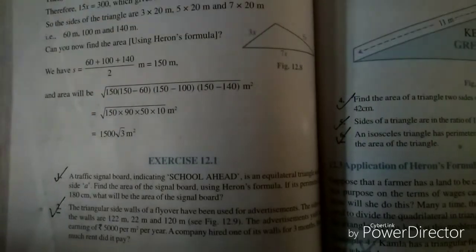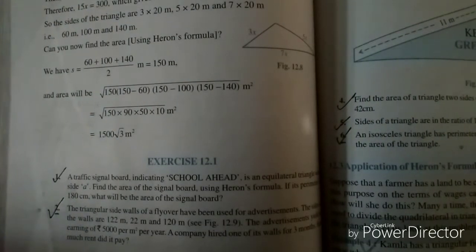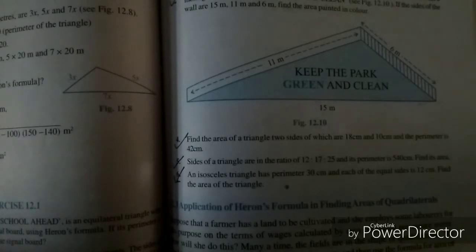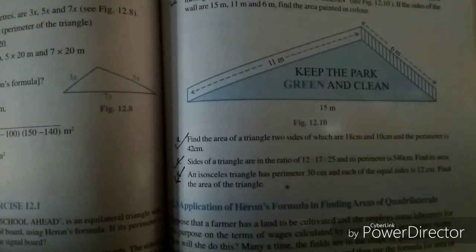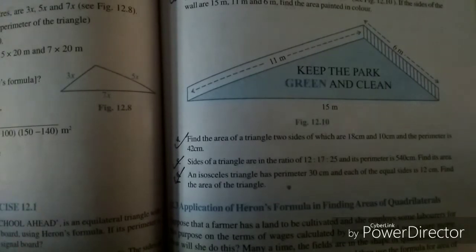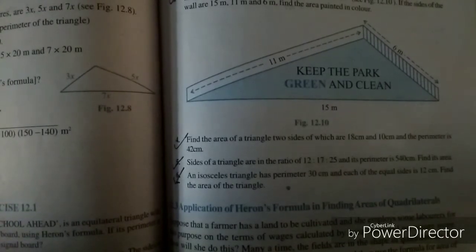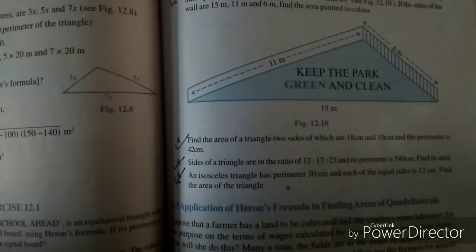You have exercise 12.1 and here your question number 2 is very important. Next, your sixth question is very important, and with that there is question number 5. These two questions can be asked in your three markers.